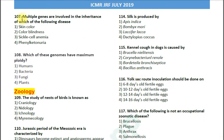Question number 107: Multiple genes are involved in inheritance of which of the following? Options: 1. skin color; 2. color blindness; 3. sickle cell anemia; 4. phenylketonuria. The correct answer is option one — skin color. Skin color involves melanin production and is under the control of multiple alleles. Question number 108: Which of these genomes has maximum ploidy? Options: humans, bacteria, fungi, and plants. The answer is plants. Plants exhibit maximum polyploidy, which is useful for crop production.